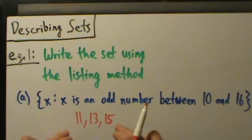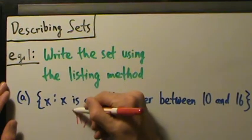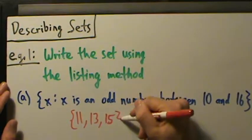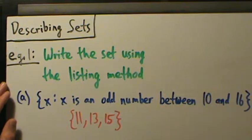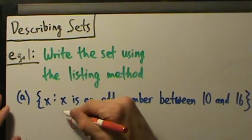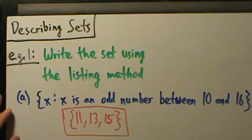But remember, for the listing method, we also have to have curly braces there. And they've got to be curly braces. They can't be brackets or parentheses or anything. Okay, so we talked about that in earlier videos. So that's our answer for part A. That's it.